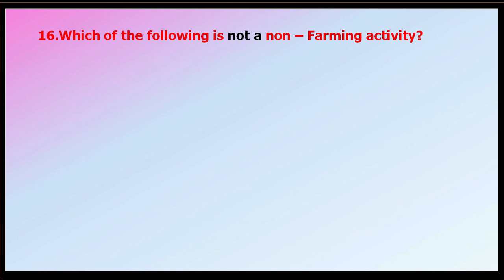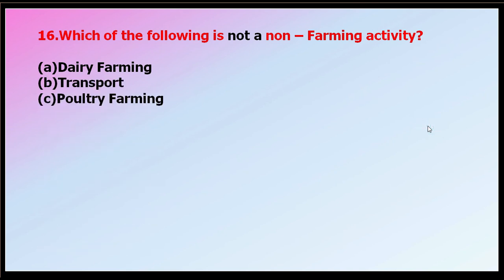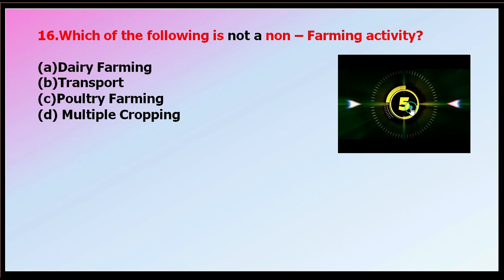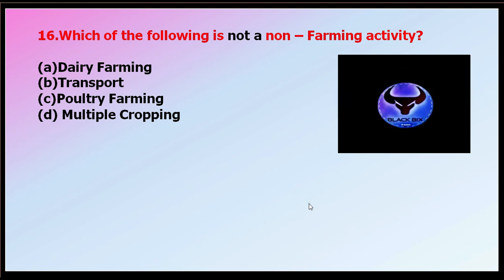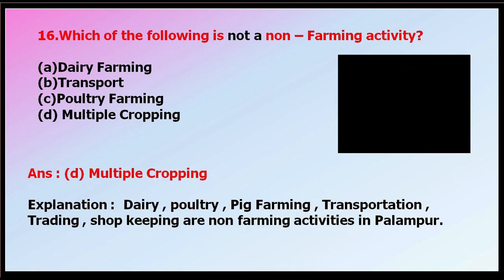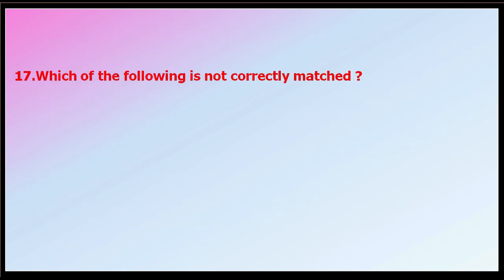Question number sixteen: which of the following is not a non-farming activity? Options: dairy farming, transportation, poultry farming, or multiple cropping. The correct answer is multiple cropping, because it is related to farming activities. Dairy farming, poultry farming, transportation, and trading are all non-farming activities carried out in village Palampur. There are two types of activities in Palampur: farming and non-farming.